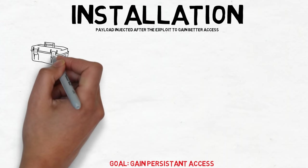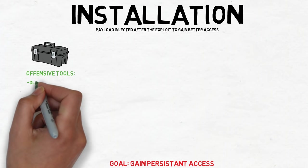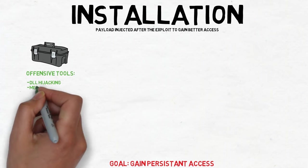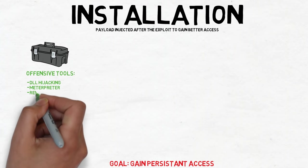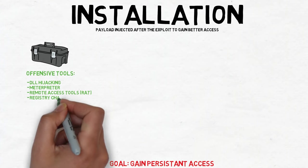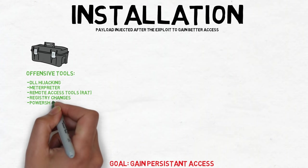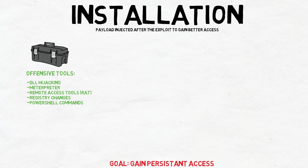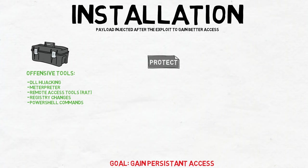Some common payload and techniques during this stage involve DLL hijacking, injecting meterpreter or similar payloads, installing a remote access tool, otherwise known as RAT, registry changes to make a program automatically start up or persistent, and executing PowerShell in fileless attacks.